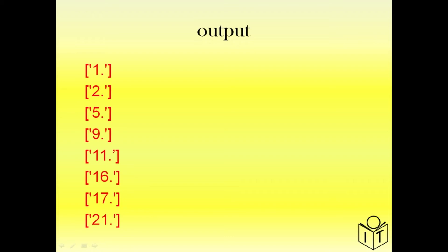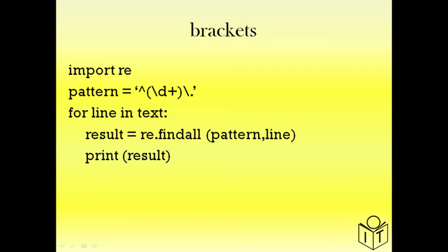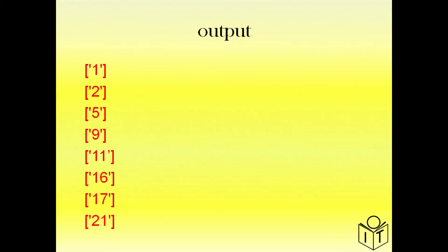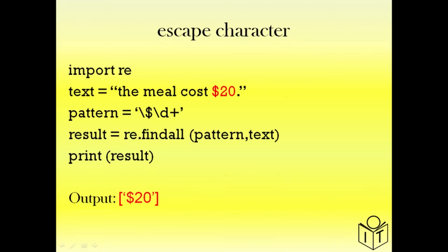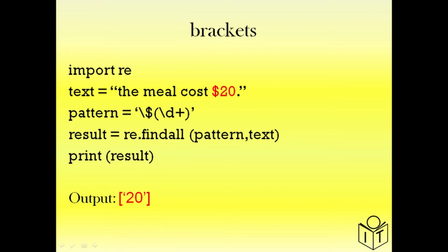Now if we don't want that dot in our results, we can use brackets to extract just what's inside them — so \d+ inside brackets matches the digits while the dot is matched but excluded from results. We can also look at another example of the escape character: if we have text with a dollar sign and want to match the actual dollar sign character, we use \$ with the escape character, then \d+ to match the digits. Using brackets around \d+ means our output is just the number 20 without the dollar sign.